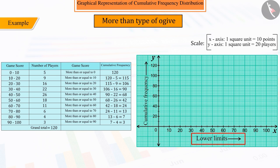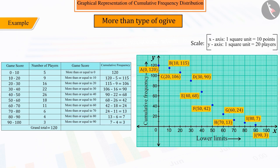Let us now mark the corresponding points A, B, C, D, E, F, G, H, I and J of ordered pairs obtained from all these lower limits and corresponding cumulative frequency on the graph and join all these points carefully.